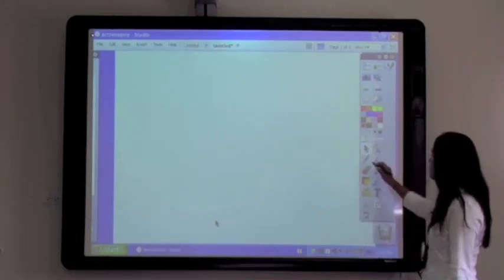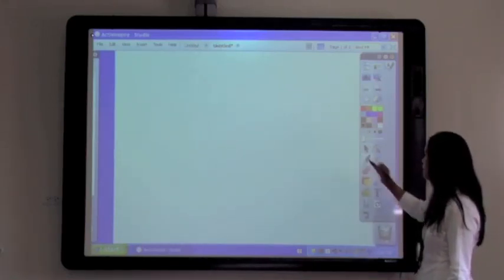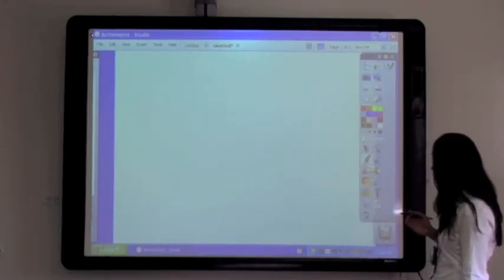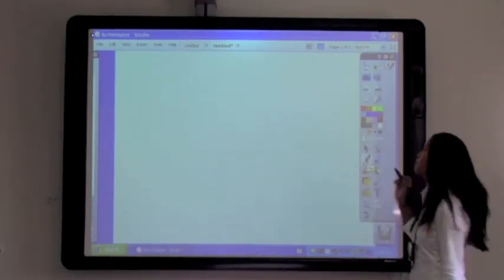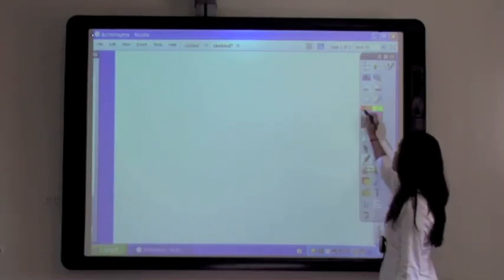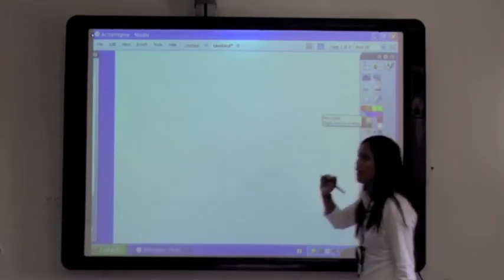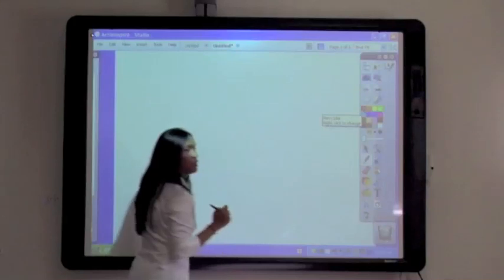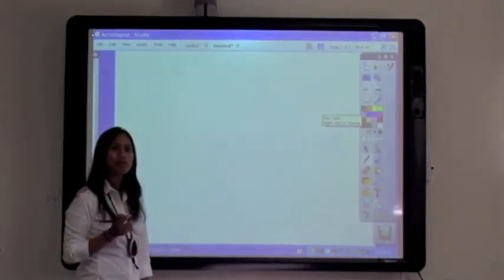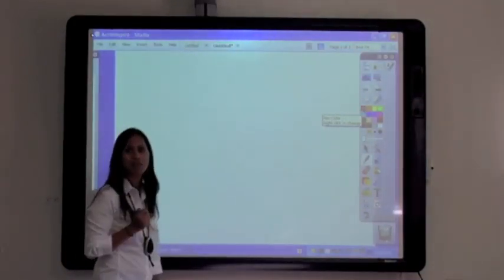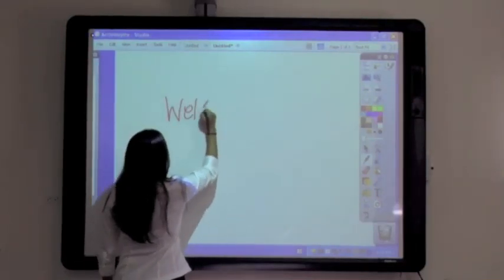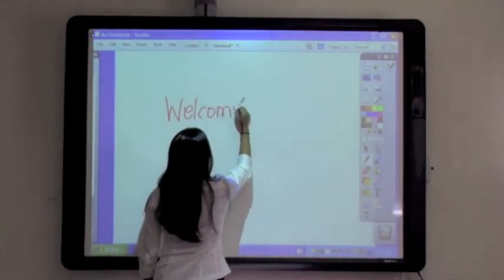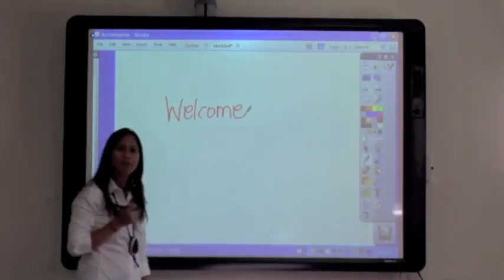Let's start off with the pen tool. I'm simply going to press on the pen tool. And now I can select colors from this color palette here. So let's say I want to select the color red. Now I'm ready to write on the board. When I write on the board, I want to make sure that I'm pressing firmly on the board. Okay, so there's my writing.